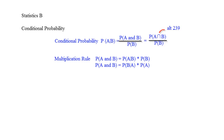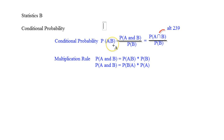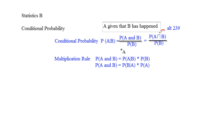Hi, today in Statistics we'll be talking about conditional probability. The new notation is going to be this A absolute value bar B, and that's going to be: find the probability of A given that B has happened. So that's what that's saying right there.